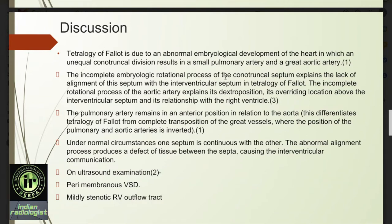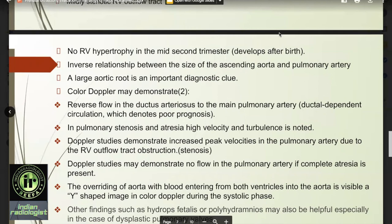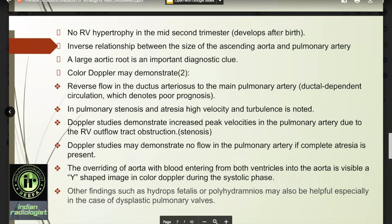Under normal circumstances, one septum is continuous with the other. The abnormal alignment process produces a defect of tissue between the septa, causing the interventricular communication. On ultrasound examination, a perimembranous VSD is noted. A mildly stenotic right ventricular outflow tract is noted. Right ventricular hypertrophy is not noted in the mid-second trimester but develops after birth. There is an inverse relationship between the size of the ascending aorta and pulmonary artery — a large aortic root is an important diagnostic clue.